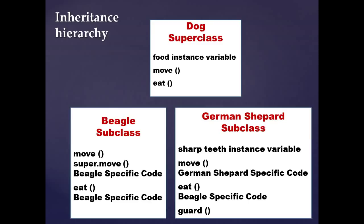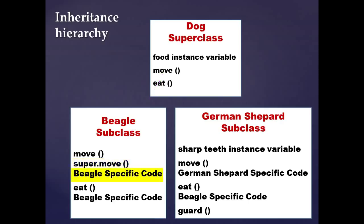You might ask: if I override the superclass method, can I still use that code? The answer is to use the super keyword. We call the code in the superclass, execute that, and then once the superclass move method code has executed, the beagle-specific code in the move method executes and finishes. It's like a hybrid between the superclass and subclass code — you get to use both. The super keyword calls the inherited version of the move method, and after super finishes, it returns and executes the beagle's move-specific code.